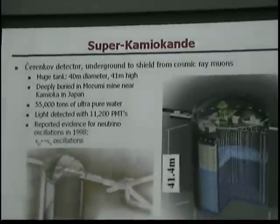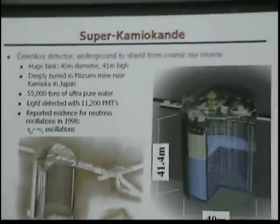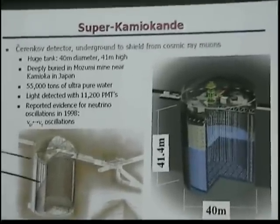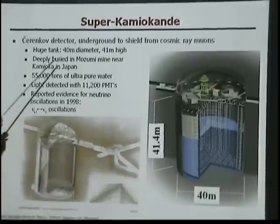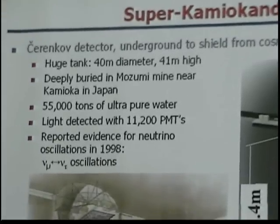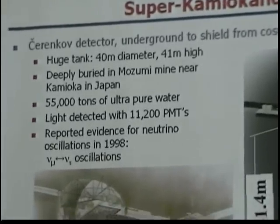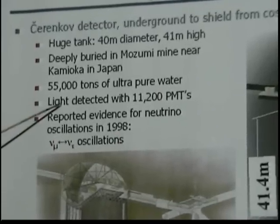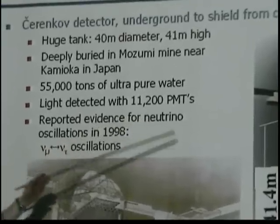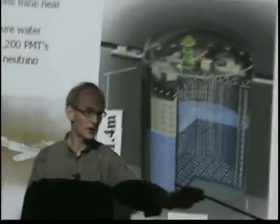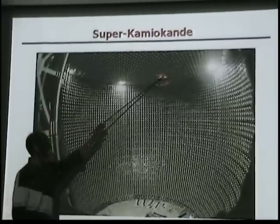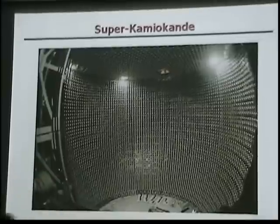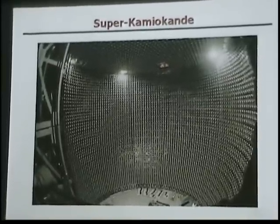Here we have a neutrino detector in Japan — it's a Cherenkov detector, 40 meters in diameter, 40 meters high, and filled with 55,000 tons of pure water. The signals are collected with photomultiplier tubes. This is the detector — here is the access hole, and you can see the entire detector is covered with photomultiplier detectors.